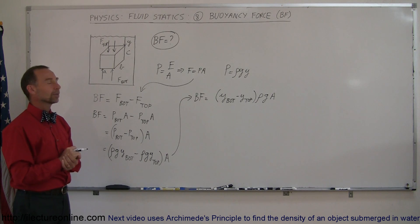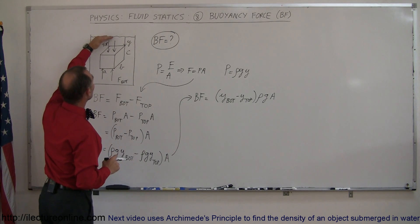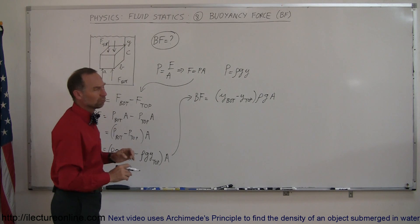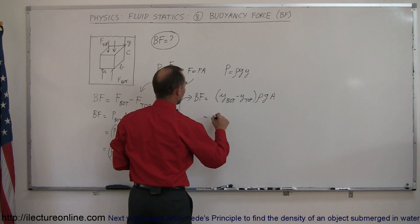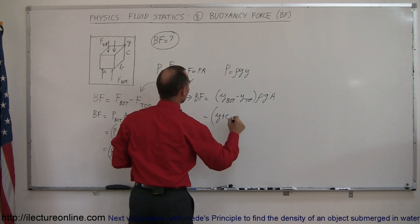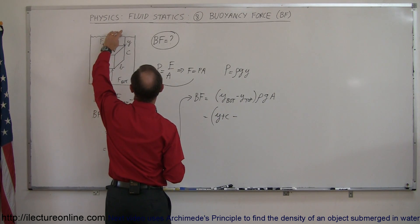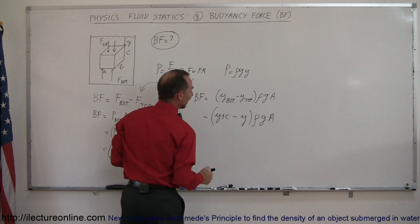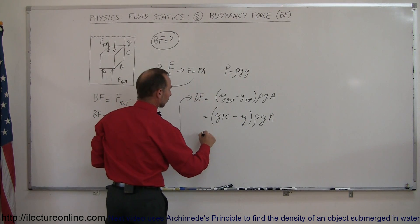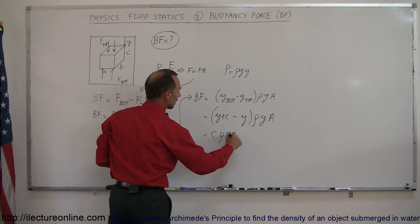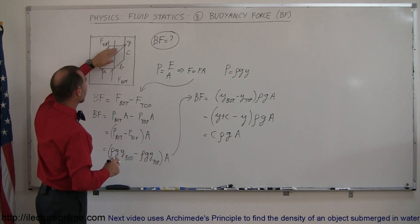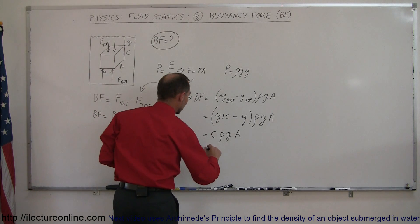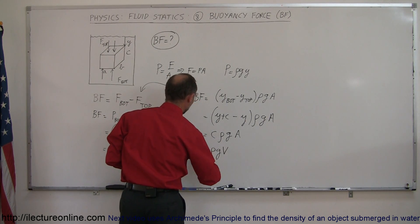What are y at the bottom and y at the top? The y at the bottom is the distance from the top of the liquid to the top of the cube, plus c, the height of the cube. So this equals (y + c) minus y, times rho times g times A. The y's cancel out, leaving c times rho times g times A. Now, A is the cross-sectional area of the cube and c is the height, so c times A is the volume of the cube. This gives us buoyancy force equals rho times g times the volume of the cube.